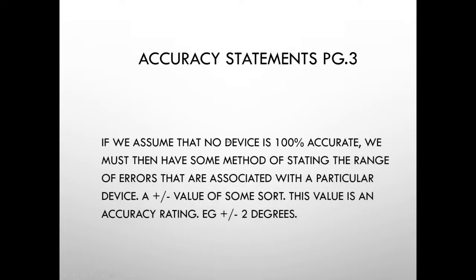When we talk about accuracy, we quantify it in something called an accuracy statement. We automatically assume no device is 100% accurate, so we must have some method of stating how inaccurate it is. This is done by stating the range of errors associated with a particular device — a plus or minus value of some sort, generally in some type of unit. We call that an accuracy rating. For a thermometer, it may be accurate to plus or minus two degrees of the reading, or two degrees of span.